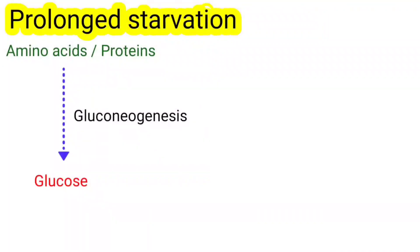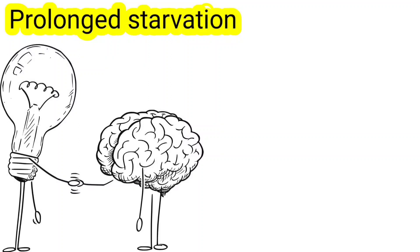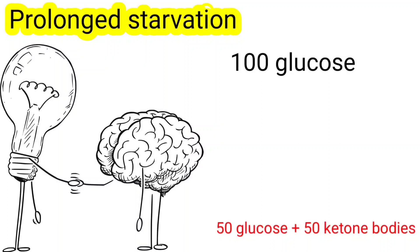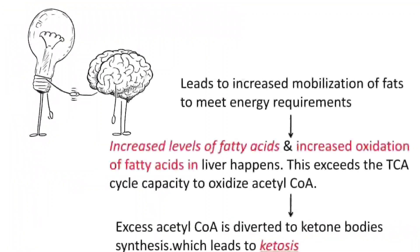In prolonged starvation, gluconeogenesis from proteins diminishes due to reduced release of amino acids from muscle. Meanwhile, the brain adapts by using ketone bodies to replace about half of its glucose oxidation. For example, if the brain could normally use 100 glucose molecules, during prolonged starvation it uses 50 glucose and replaces the remaining 50 with ketone bodies. Increased ketone body production leads to ketosis, which causes metabolic acidosis — seen in severe prolonged starvation, called starvation ketoacidosis.